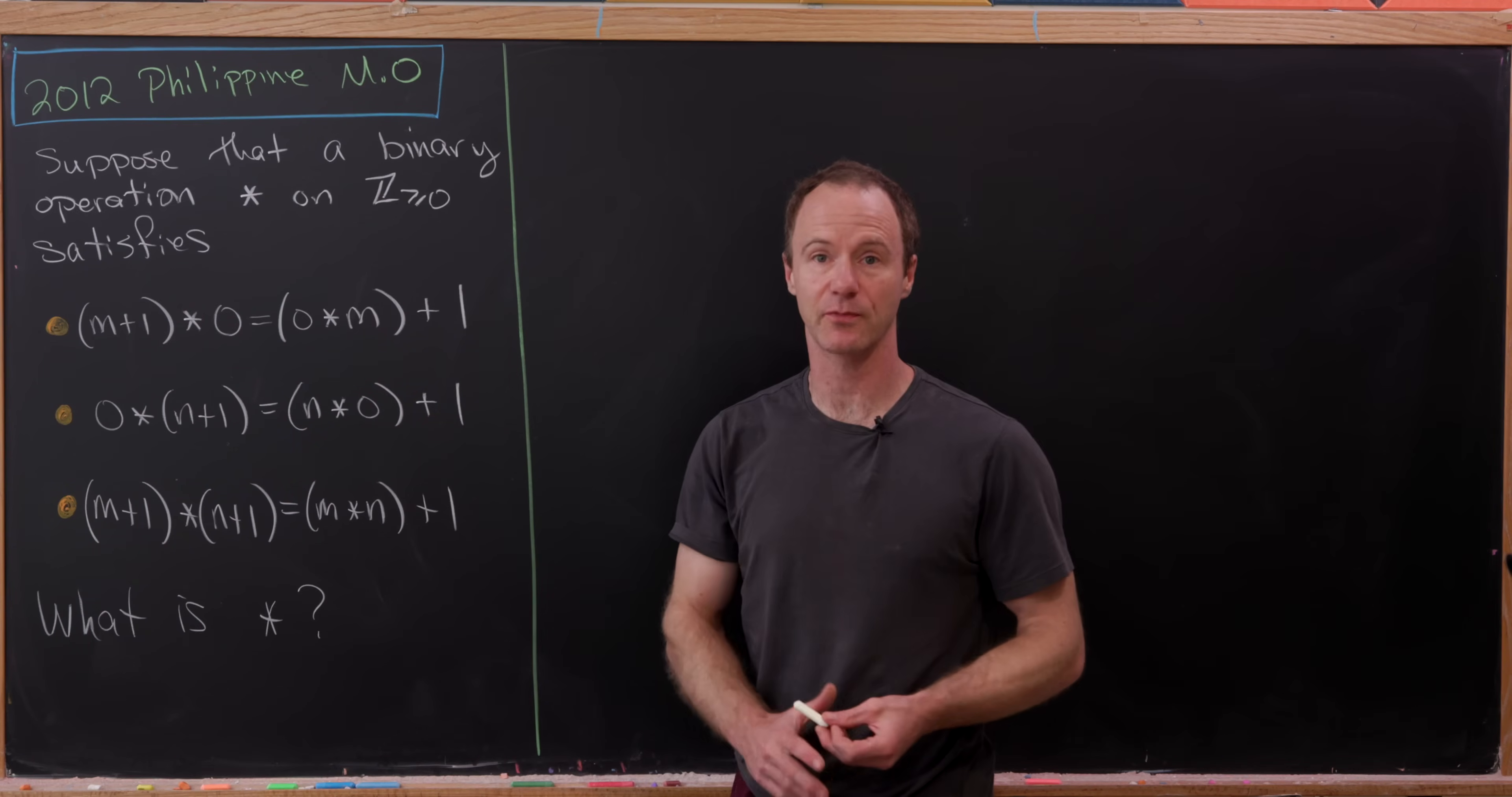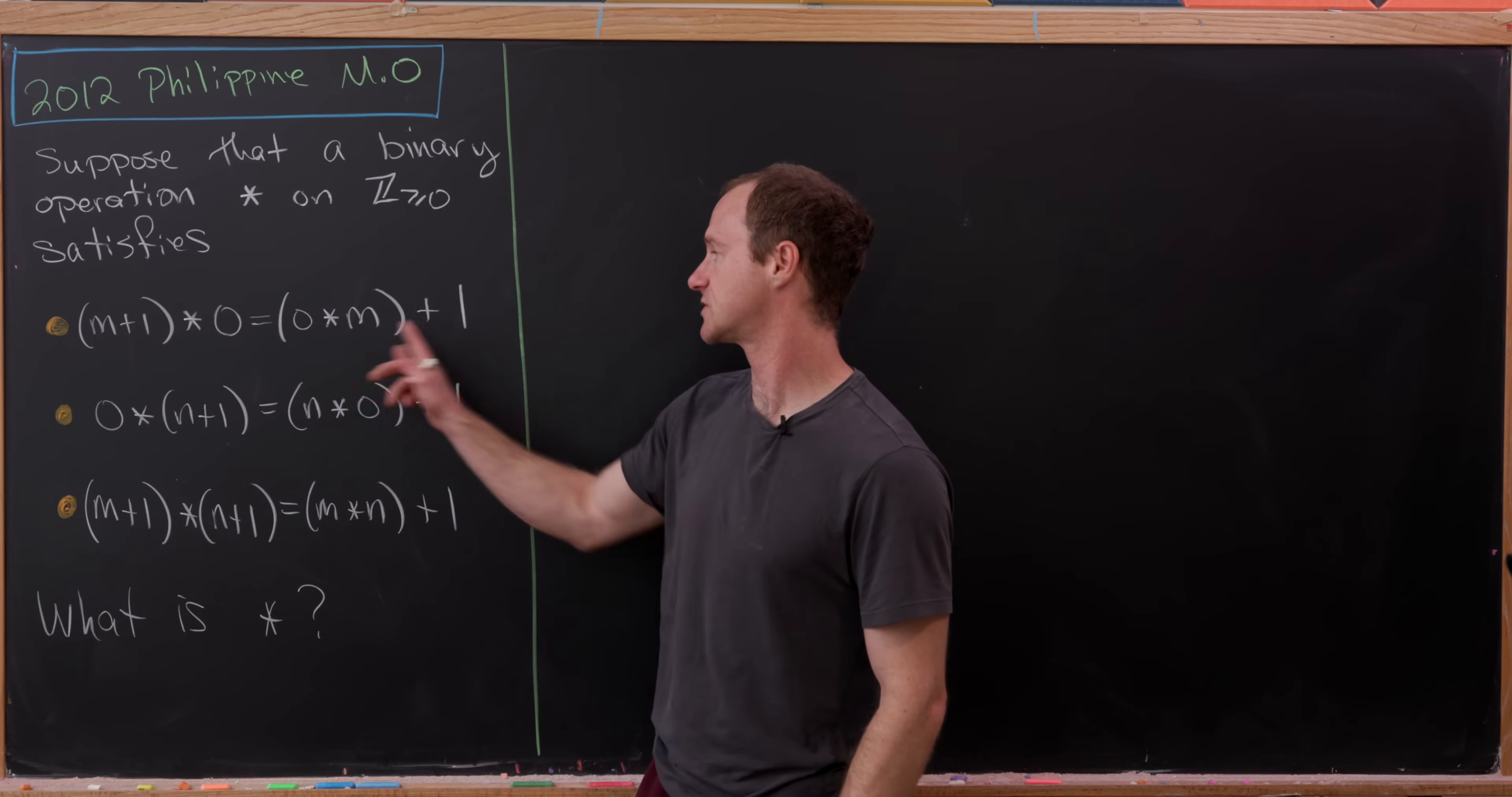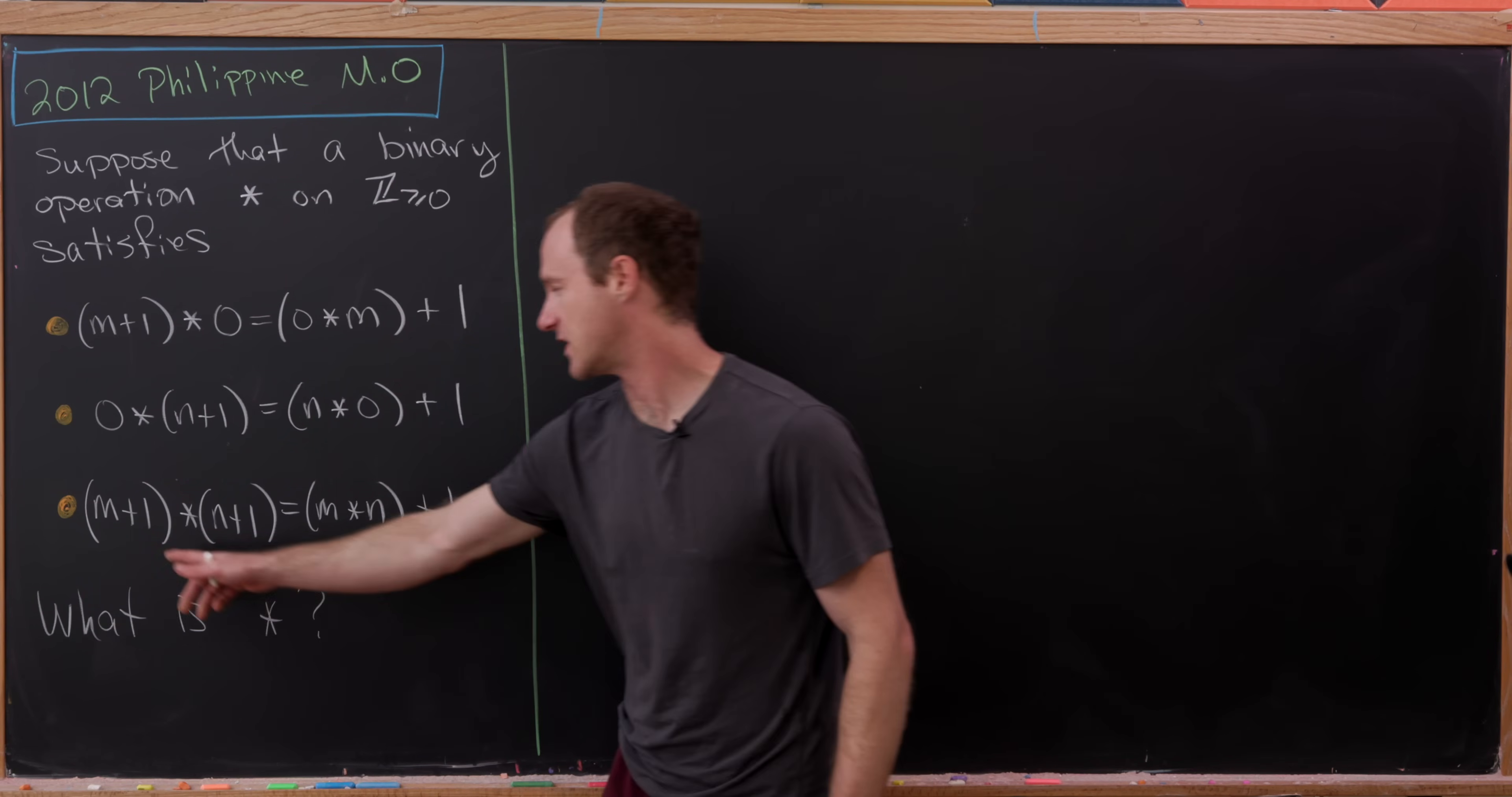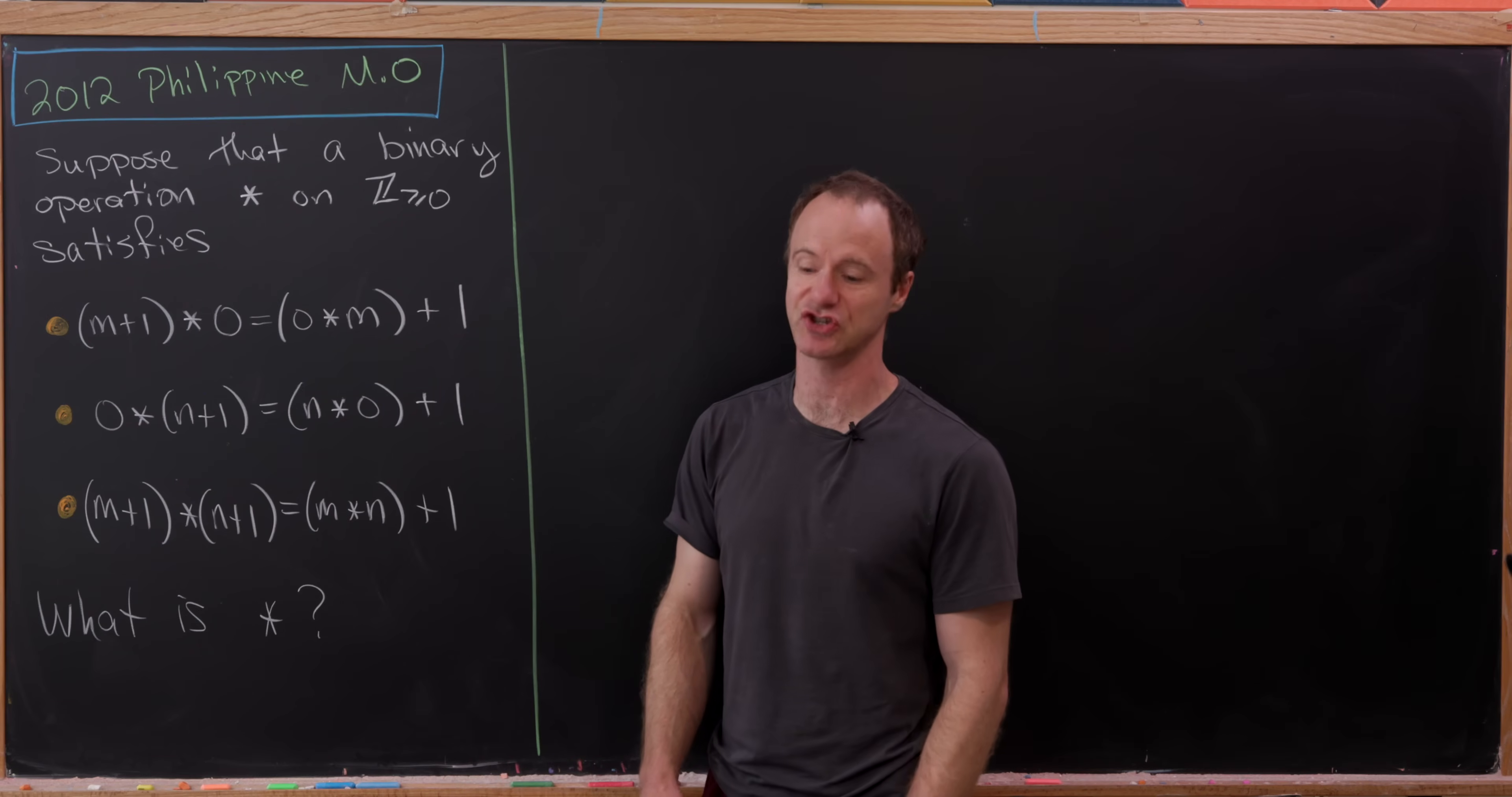Let's suppose we've got a binary operation, call it star, on the set of non-negative integers satisfying three conditions. We have (m+1) star 0 equals 0 star (m+1). We have 0 star (n+1) equals (n star 0) + 1. And finally we have (m+1) star (n+1) equals (m star n) + 1. The goal, not in the exam but the goal we'll take, will be what is this star operation.